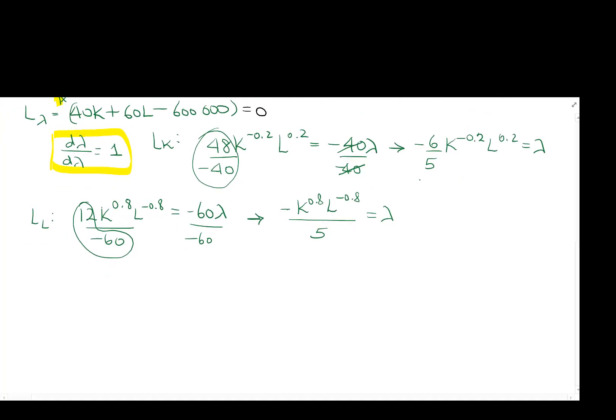Now, now what we're going to do, again, we're going to take the two expressions we get for lambda, set them equal to each other, and then go isolate one of the variables. So negative 6 over 5, K to the negative 0.2, L to the 0.2 equals to lambda, which also equals to negative K to the 0.8, L to the negative 0.8 over 5. So those both equal to lambda, and now we're just going to solve for one of the unknowns. So I can cancel a 5 on the bottom for both of those.